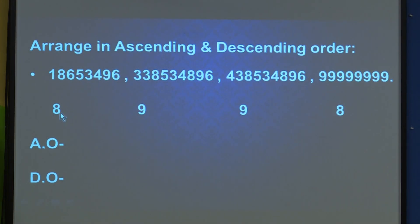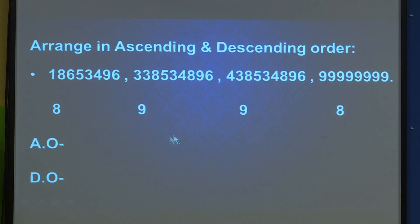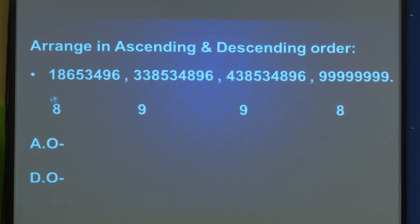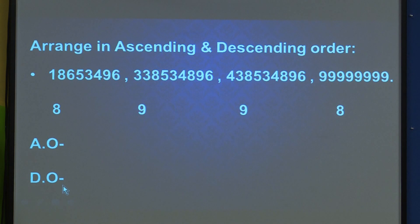First you have to count the number of digits — write it with a pencil in small handwriting — then you can find the number of digits easily. It will be easier to compare and then write with a pen the ascending and descending order. You can prepare your own numbers — 6-digit, 7-digit, 8-digit, 9-digit — of your choice and create new examples, then write them in ascending and descending order.